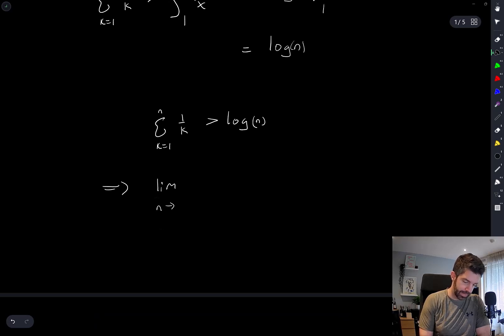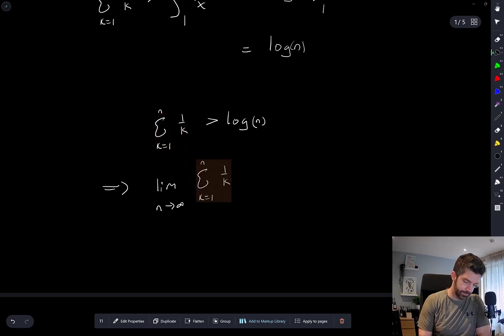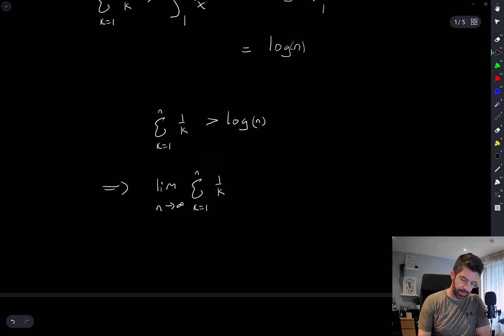The limit as n goes to infinity of this is greater than the limit of that, which is infinity.